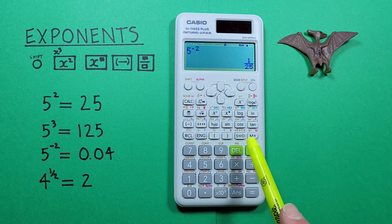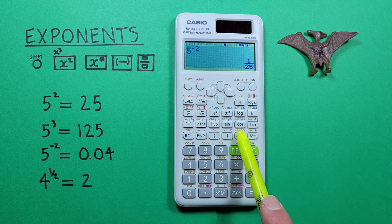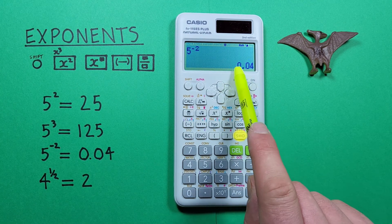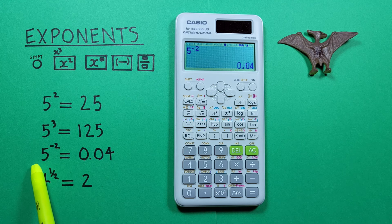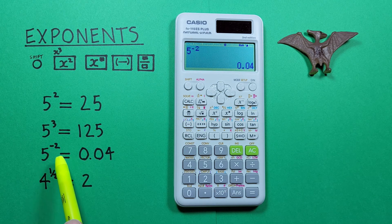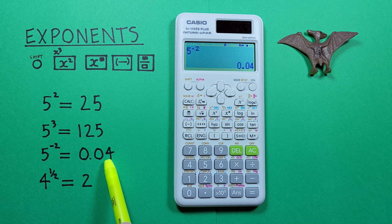If we want that as a decimal, we can use this S to D conversion key here and convert that to a decimal. So we have 5 to the power of negative 2 is equal to 0.04.